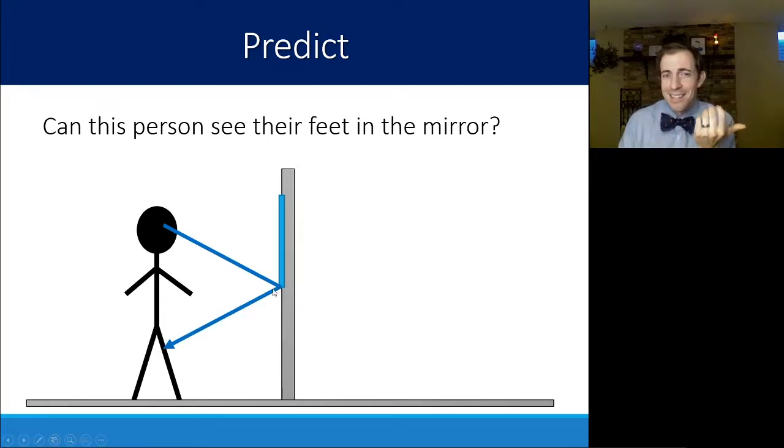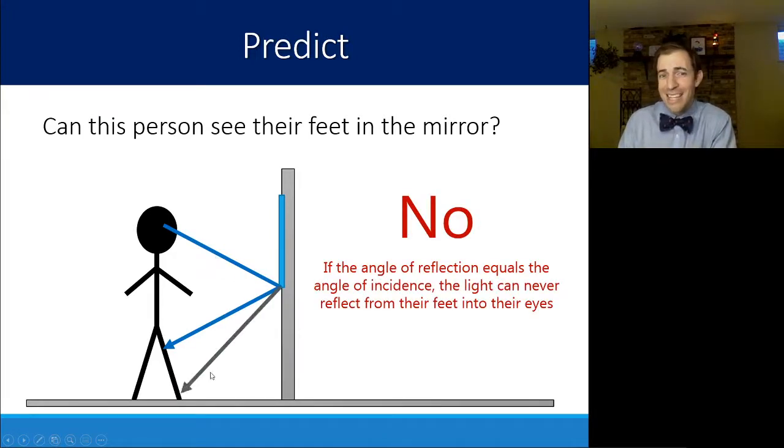If they're looking at the lowest point on this mirror, the law of reflection states that it's only going to get to like their thigh, that they're not going to be able to see their feet because it can't bounce like this. Because that angle would not match the angle of incidence. And again, this feels like common sense, but it is useful to quantify and make these things official as well.